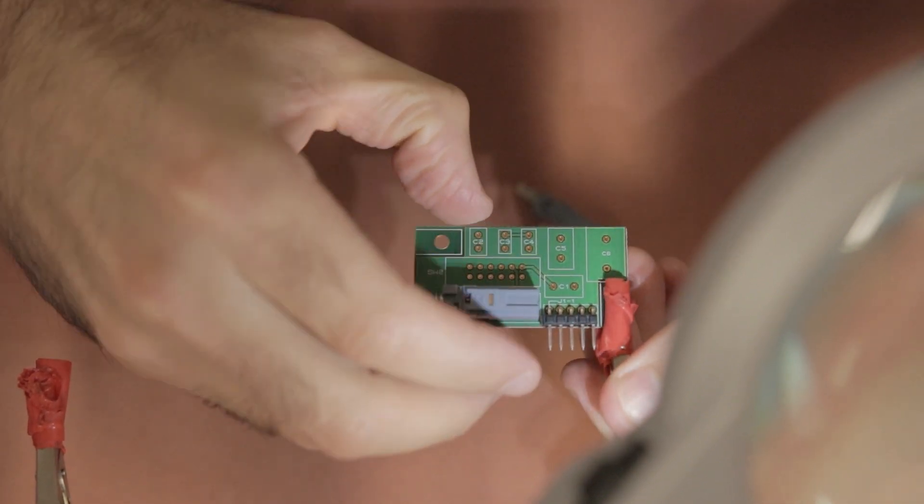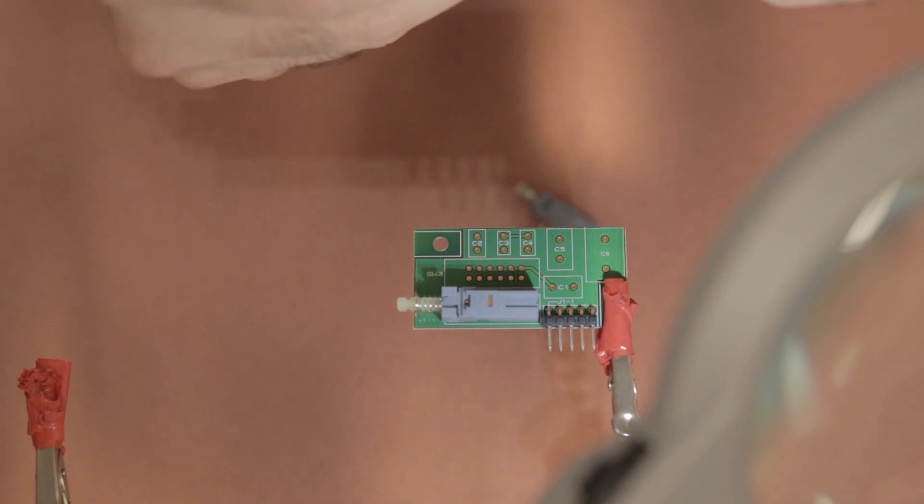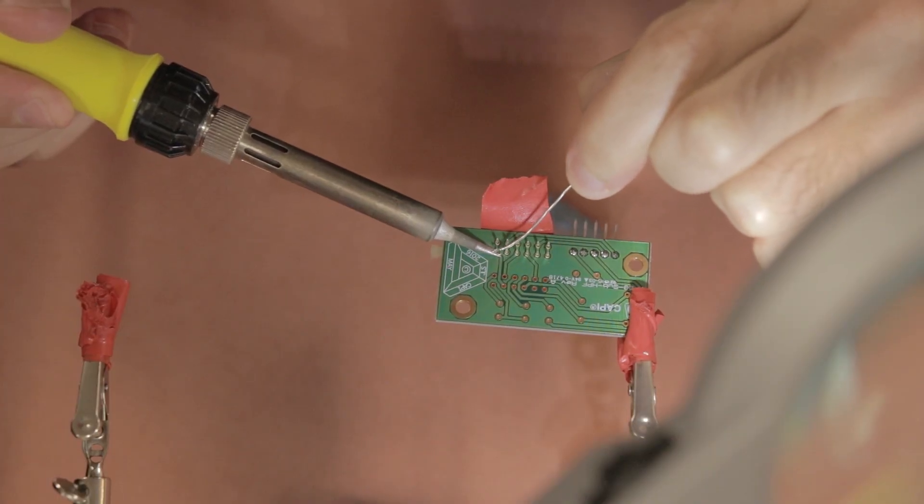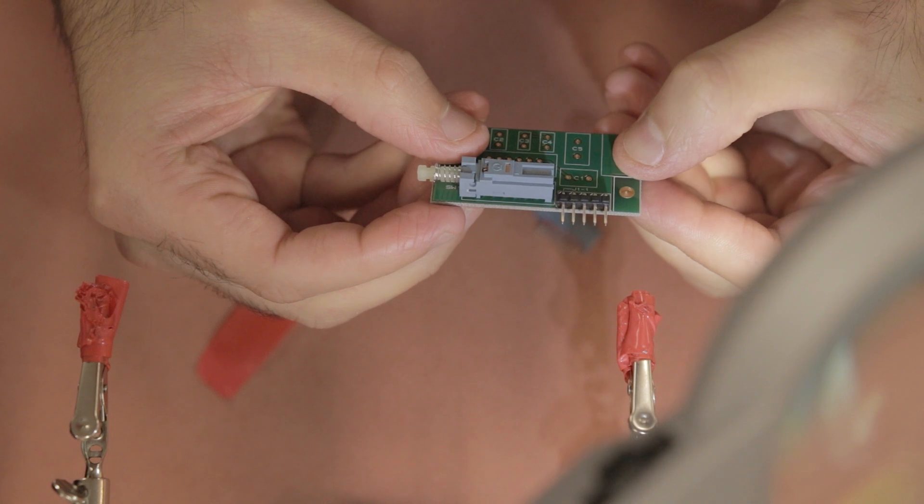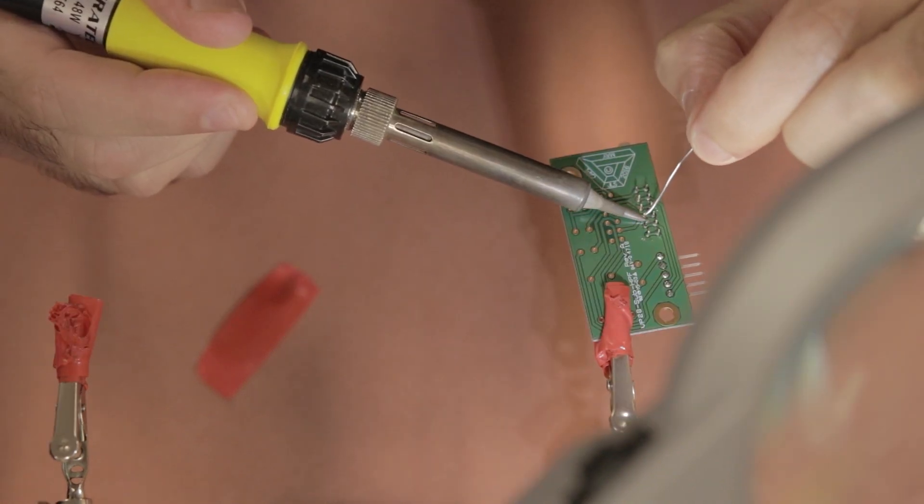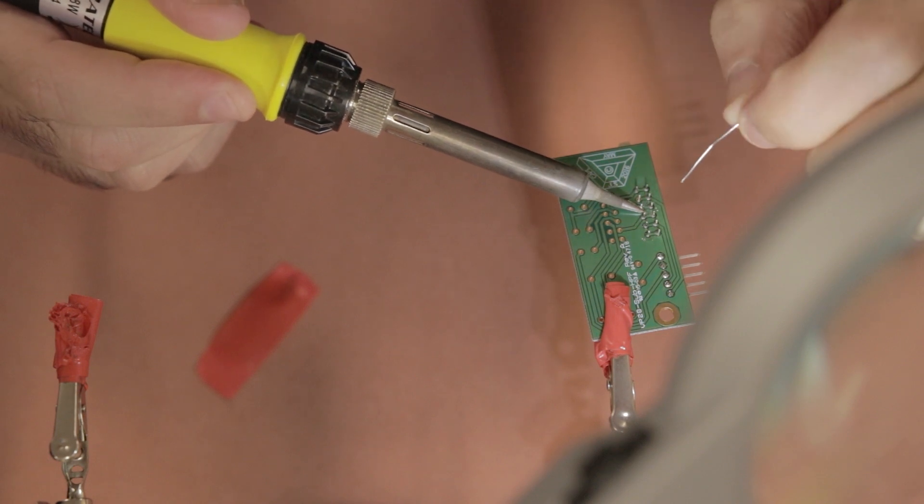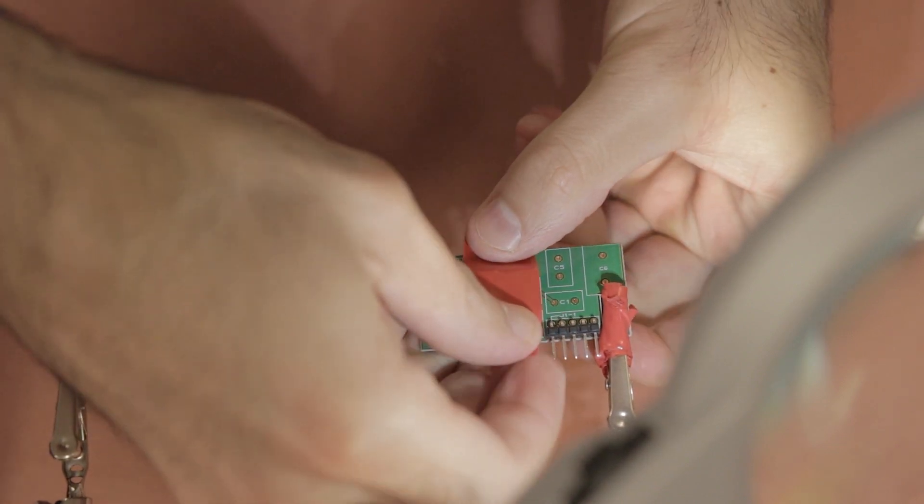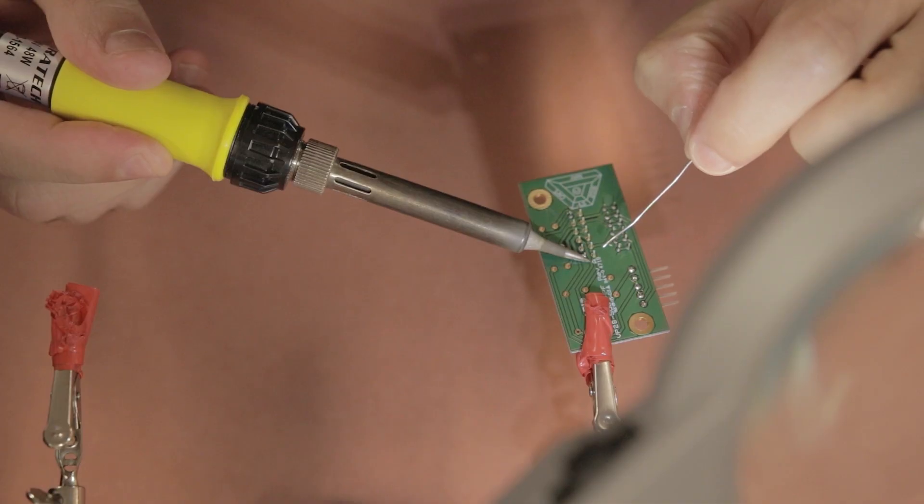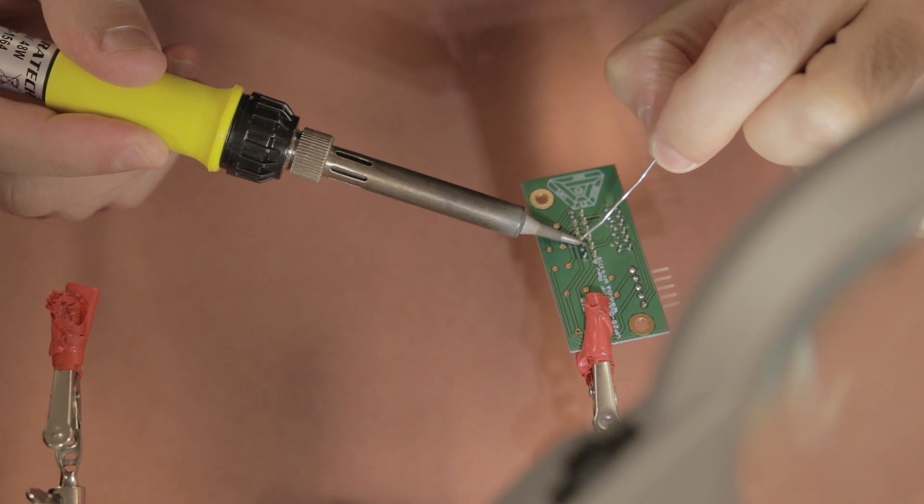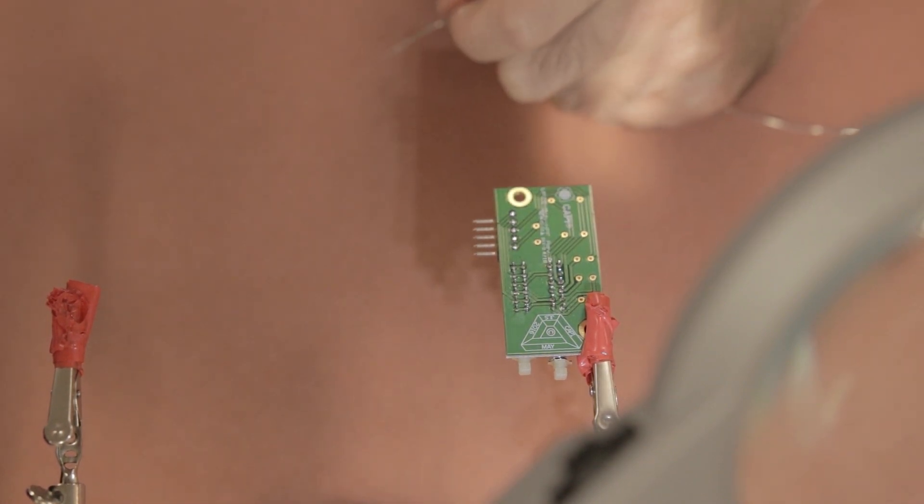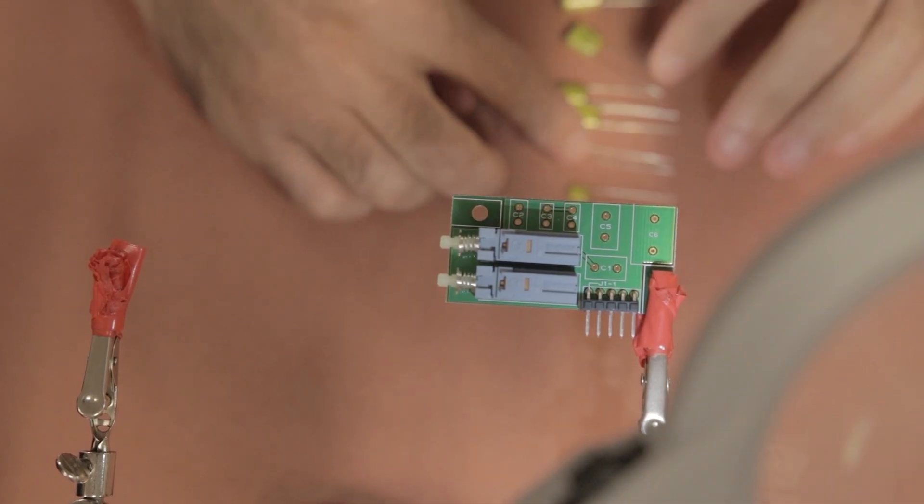The next thing to solder to this board is the CNK push button switches. They're pretty easy, basically the same as we did on the main board. I like to hold the switches in place with some tape if possible, and then turn the board over, solder one of the legs, check its orientation, and then solder the rest of the legs. Once you've soldered all the legs on the first switch, it's really just rinse and repeat for the second one.